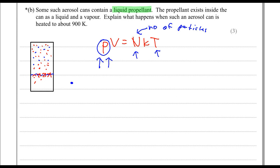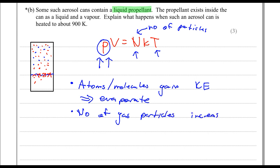To summarize, we need to say that the atoms or molecules gain kinetic energy and they evaporate. As a result, the number of gas particles increases, and that's the increase in N.